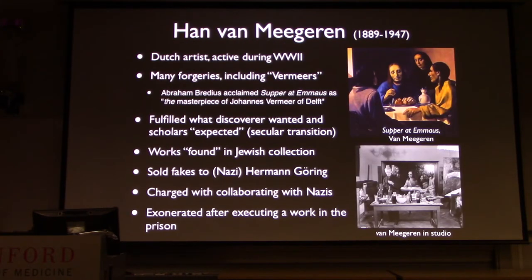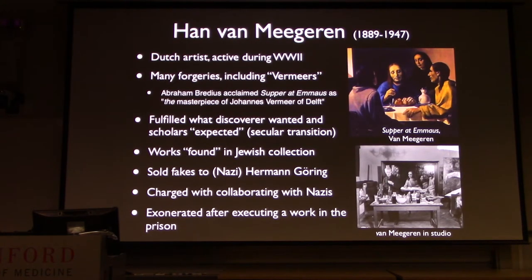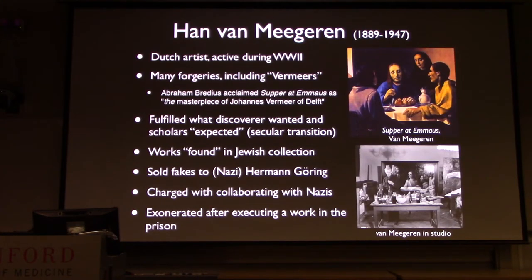One of my favorite forgers is Han van Meegeren, and I really think if anyone's a screenwriter, this person's life would make an absolutely fantastic movie. He was a Dutch artist who was not recognized — he didn't feel he was recognized properly for his own talents — and wanted to get back at the art world. He worked during World War II and made many forgeries, and was especially famous for painting Vermeers. Johannes Vermeer painted just 36 works in his life, some of the greatest paintings in the Western canon — The Girl with a Pearl Earring, View of Delft, and so forth. Van Meegeren painted this Supper at Emmaus and tried to pass it off as by Vermeer.